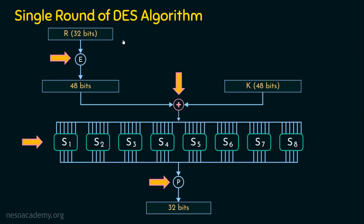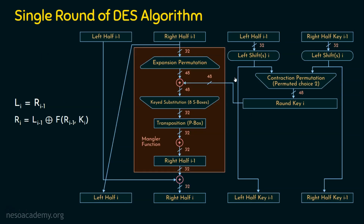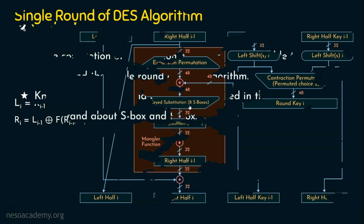So we are done with the mangler function. This mangler function performs expansion, then an XOR operation, then the S-box, and then the P-box. This function is the mangler function or the F-function. It does both substitution and transposition — transposition in the P-box and substitution in the S-box. When both transposition and substitution are present, they add both confusion and diffusion. This is how confusion and diffusion properties are added to the DES algorithm. I hope you now understand the single round of DES algorithm, how confusion and diffusion are added, and about the S-box and P-box. Thank you for watching.